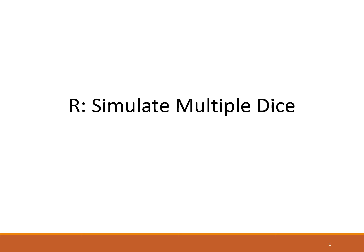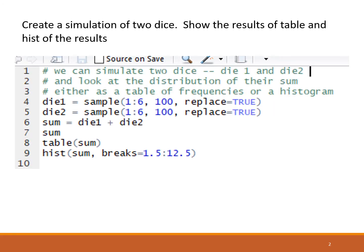In this presentation, we will look at simulating multiple dice in the R programming language. Here we're going to look at a few lines of code that will simulate the rolling of two dice and then make a histogram for the sum of those two dice. In line four, we're using the sample function.